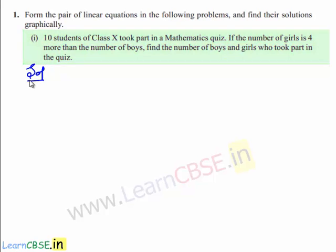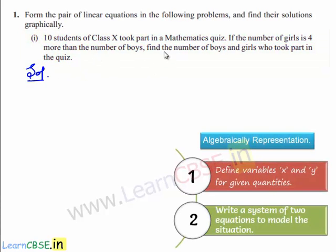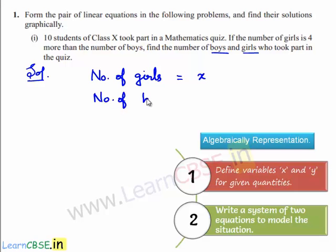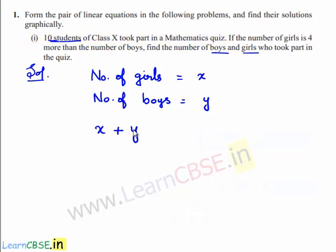Let us see the solution. In this problem, we need to find the number of boys and number of girls. So let us assume number of girls is equal to x and number of boys is equal to y. According to the given problem, there are 10 students in the 10th class who took part in mathematics quiz. So we can add girls and boys to get the total number of students. The total number of girls is x and number of boys is y, so when we add them we get 10. This is one linear equation: x plus y is equal to 10. I assume this as equation number 1.